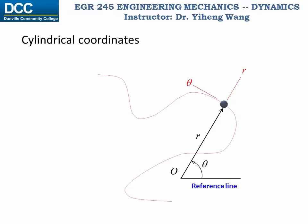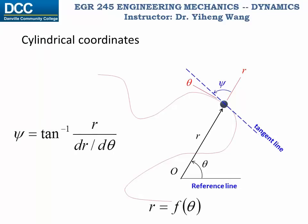There's something we need to watch out for. We know that we can always draw a tangent line anywhere along this path, but normally this line does not superimpose with either the r axis or the theta axis. However, if we do know the function of this path, we can determine this angle psi, which equals arc tangent of r over dr/dθ. This angle psi is made by the positive radial axis and the tangent line, and following the sign convention used in this class, a positive angle indicates counterclockwise rotation.